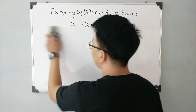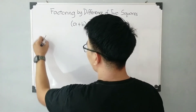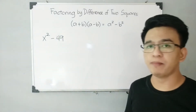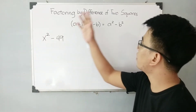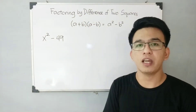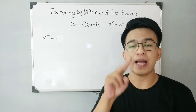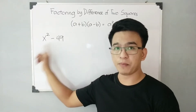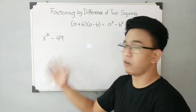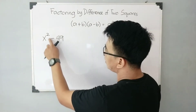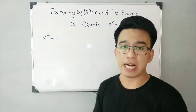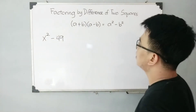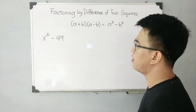Let's have an example. Let's try x squared minus 49. If you have x squared minus 49, you need to check if we can apply factoring by difference of two squares. First, you need to check whether the first term and second term are both perfect squares. Here, x squared is a perfect square, and 49 is also a perfect square. And the operation in the middle should be subtraction.